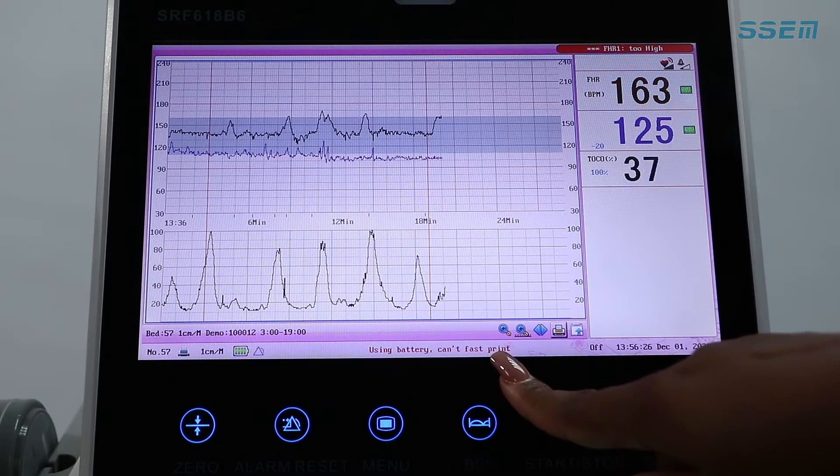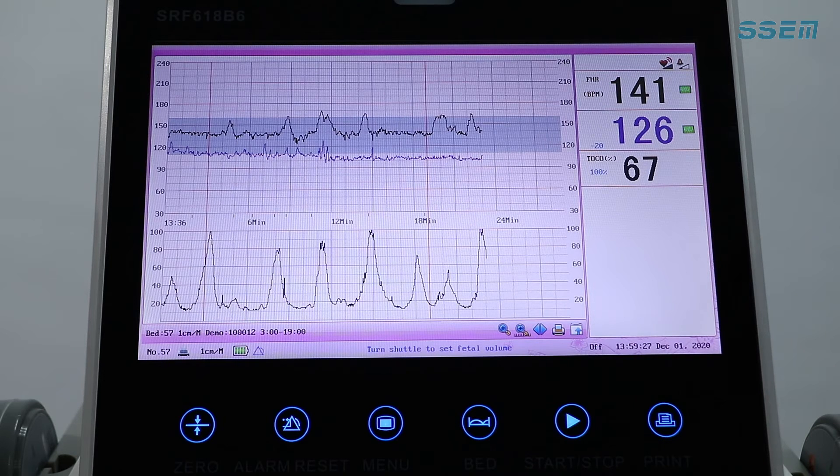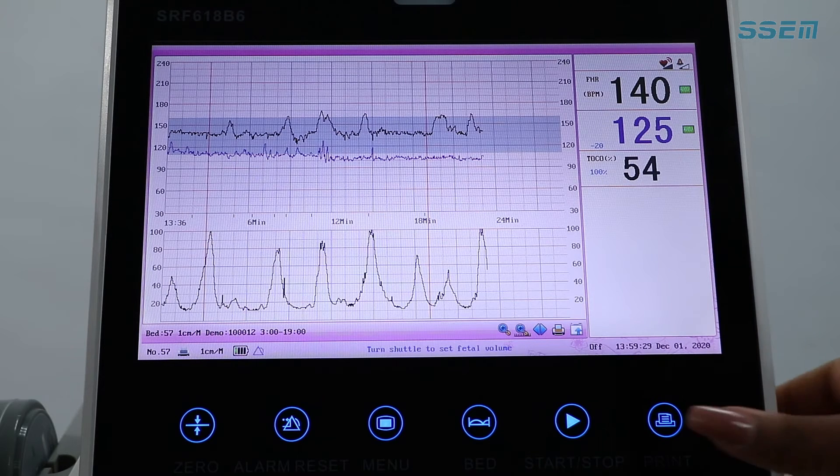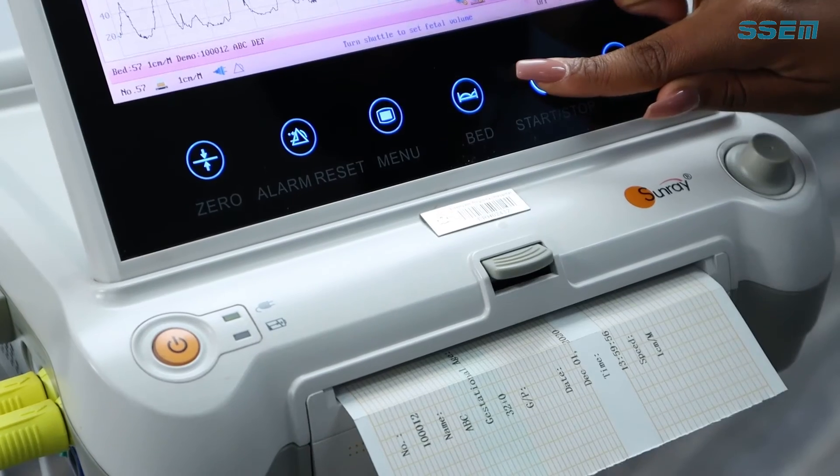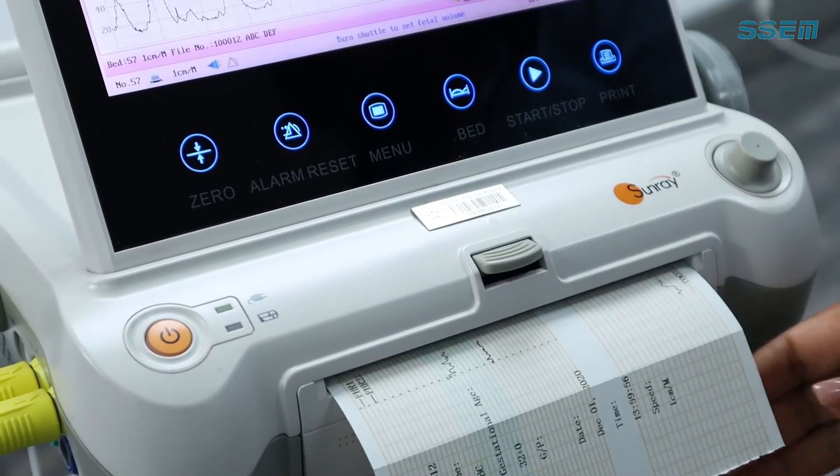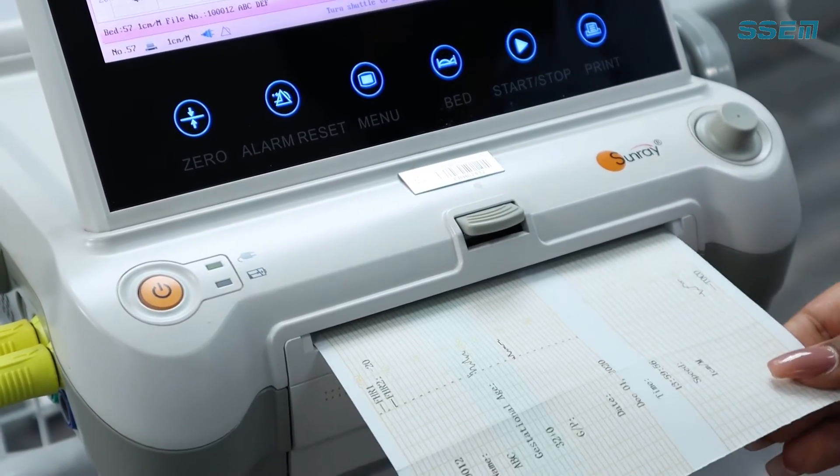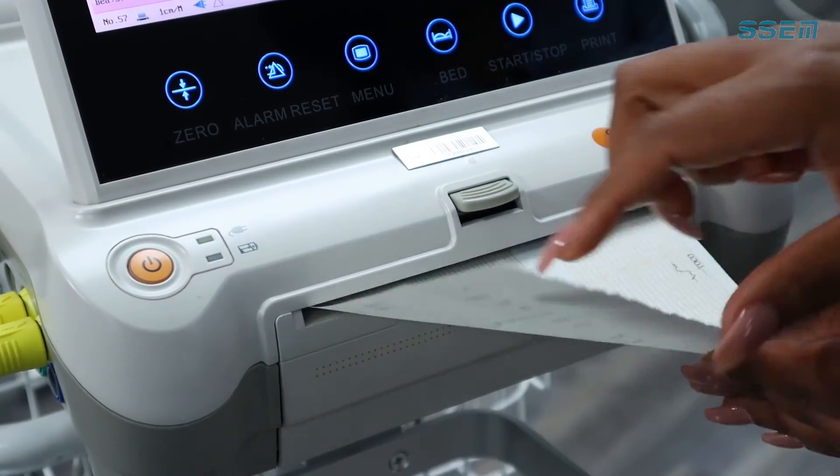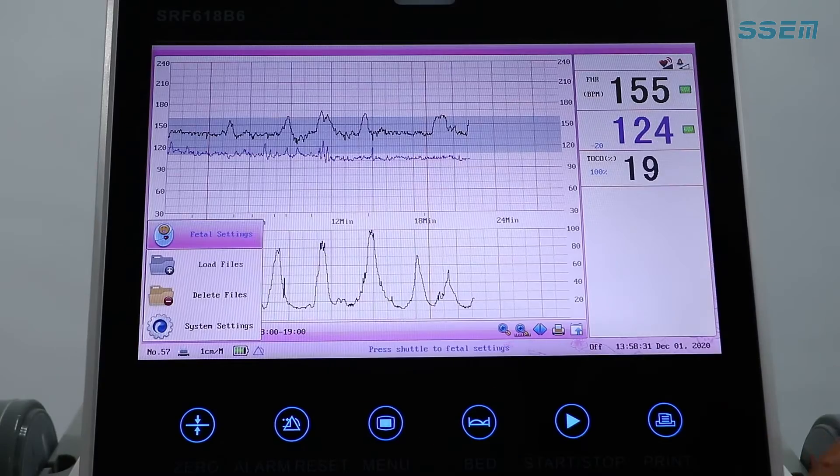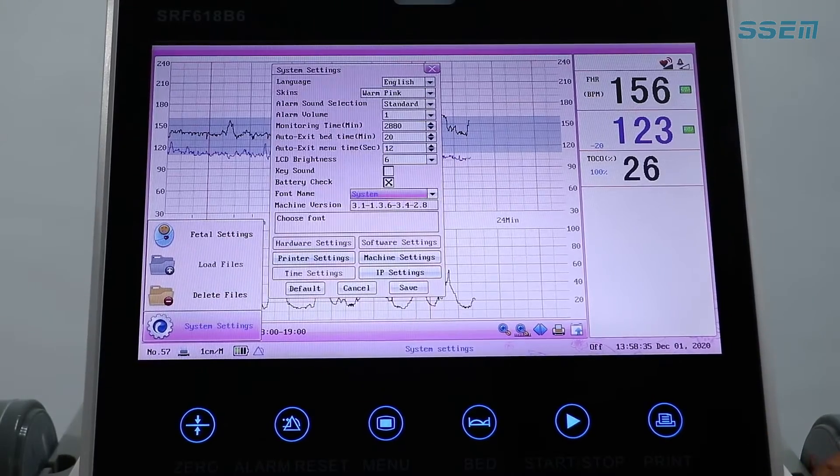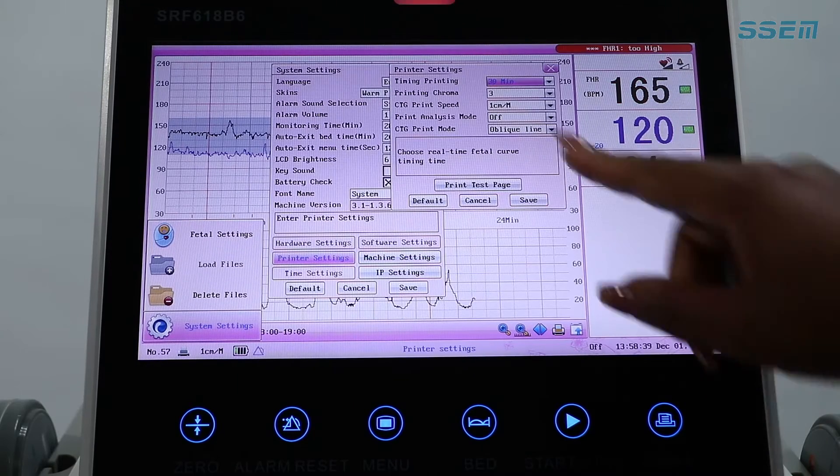The next method of print is a real-time printing. Press and hold the blue print icon. Note that this method of printing only prints from the time you press print and will stop when the stop is selected or the default printing time is reached. The length of this printout will depend on the default setting under printer settings.